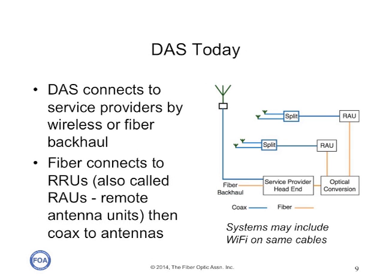Modern DAS typically uses fiber backhaul to connect to all the wireless service providers, although it can still use outdoor antennas connected over coax. The service provider head-end converts the signals to digital and transmits optically over fiber to remote antenna units, which are in turn connected to small, low-powered antennas within the facility.